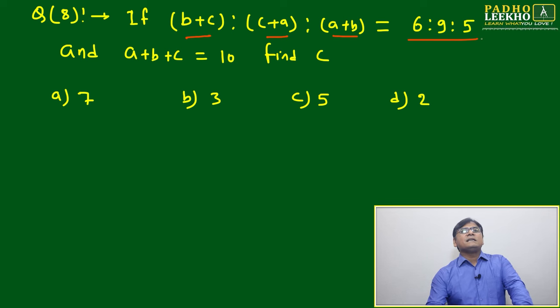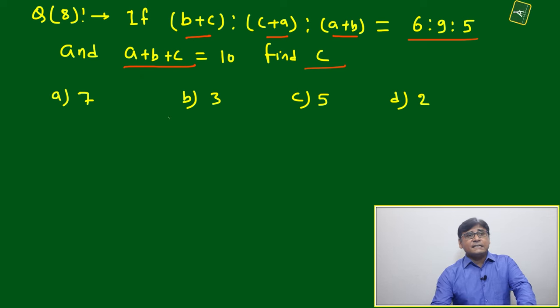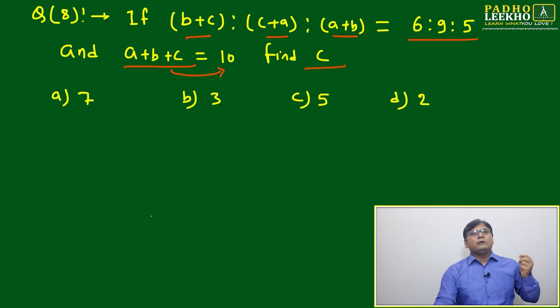If (b+c):(c+a):(a+b) = 6:9:5, and a+b+c = 10, find c. I already told you this is a very thumb rule. If sum is given, no need to worry, you will be able to solve it in any way.